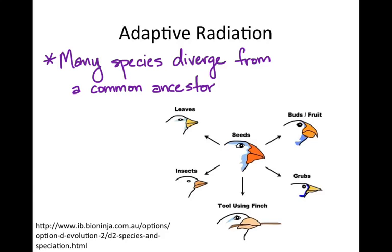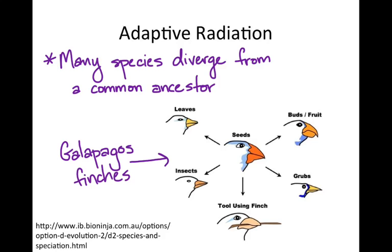It's related to something we call divergent evolution, because we'll see lots of different morphologies and niche preferences come from only a small handful of ancestors. A classic example of adaptive radiation is the Galapagos finches that Darwin saw.